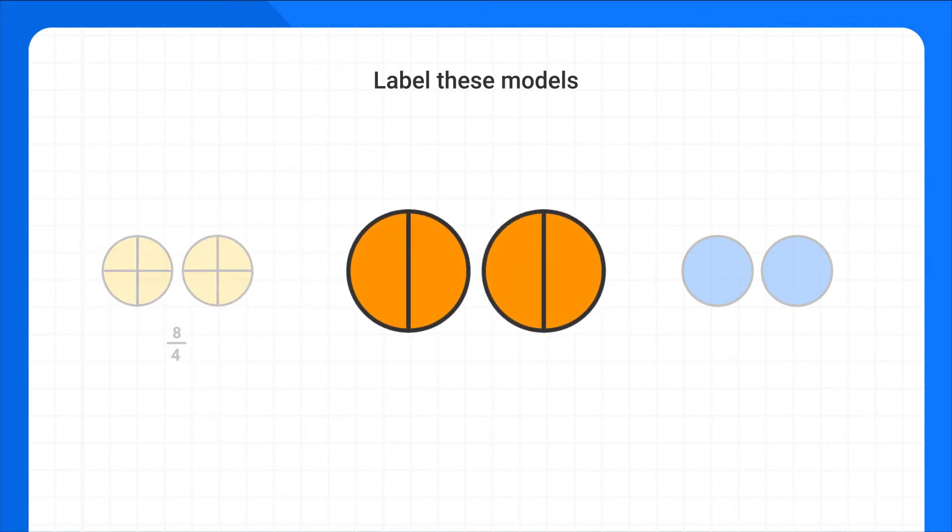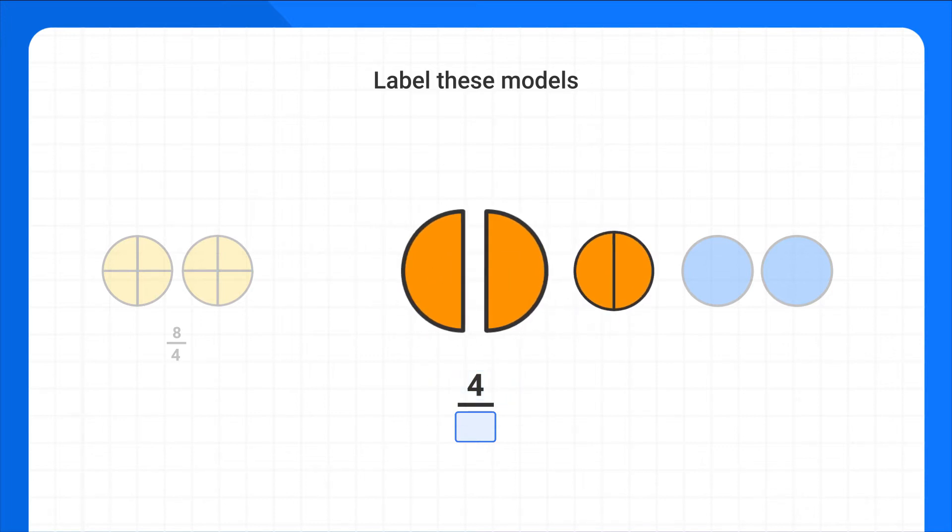In the next model, we'd count that we have 1, 2, 3, 4 shaded pieces, so the numerator of the model is 4. But if we look at each piece, we see that now it's 1 half of a circle, so we have 4 halves.